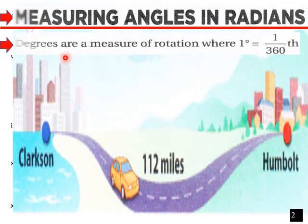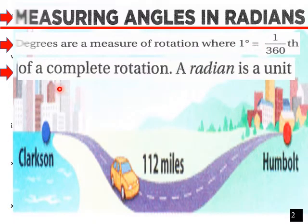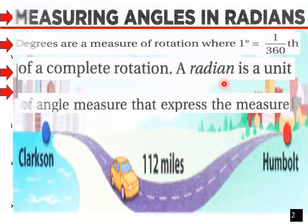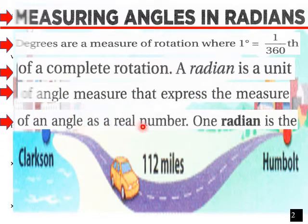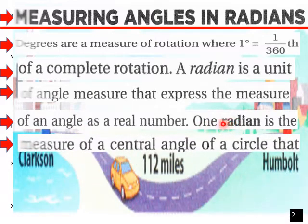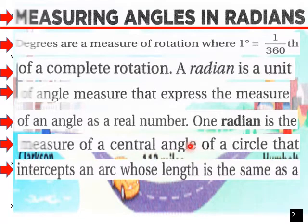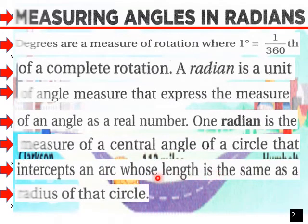Measuring angles in radians. Degrees are a measure of rotation where one degree equals 1/360th of a complete rotation. A radian is a unit of angle measure that expresses the measure of an angle as a real number. One radian is the measure of a central angle of a circle that intercepts an arc whose length is the same as the radius of that circle.